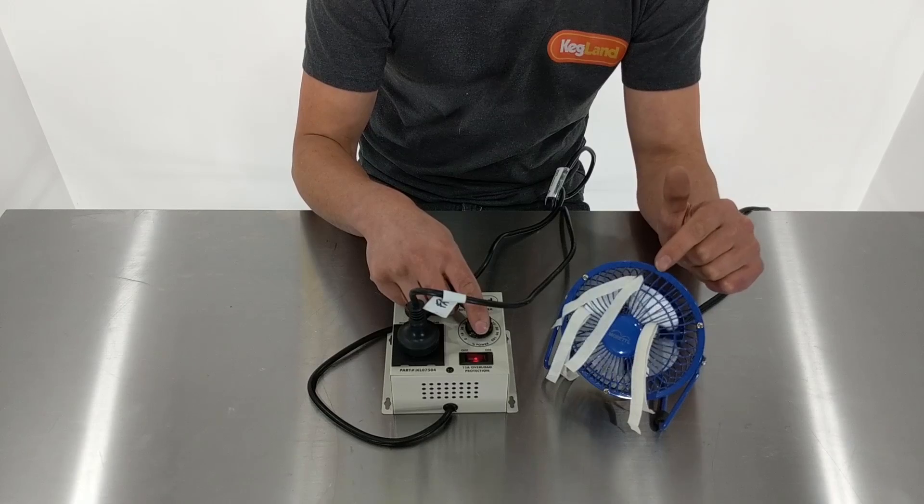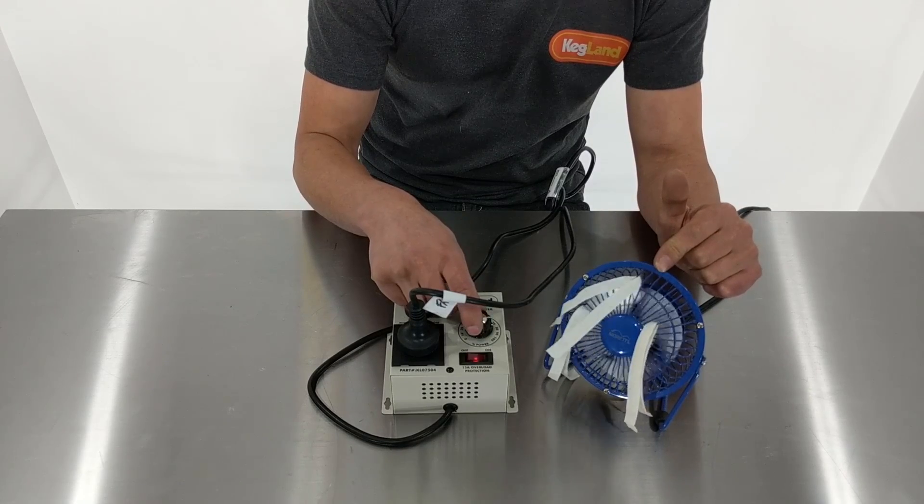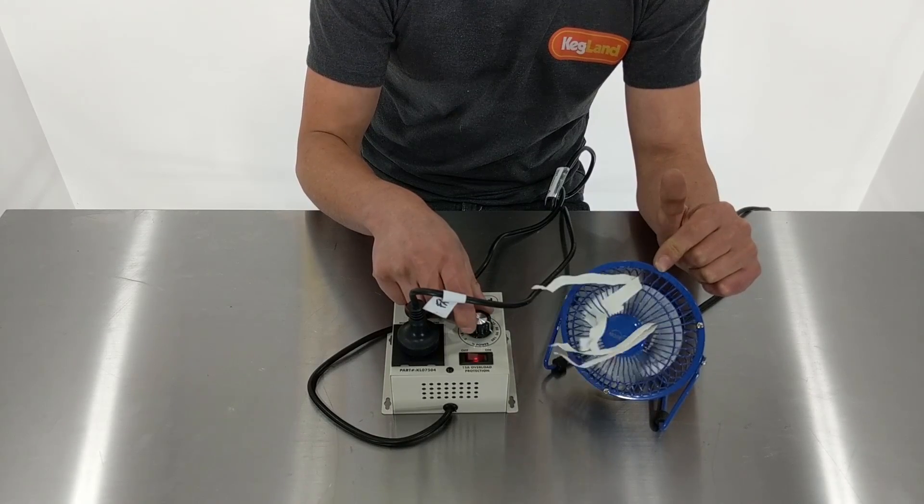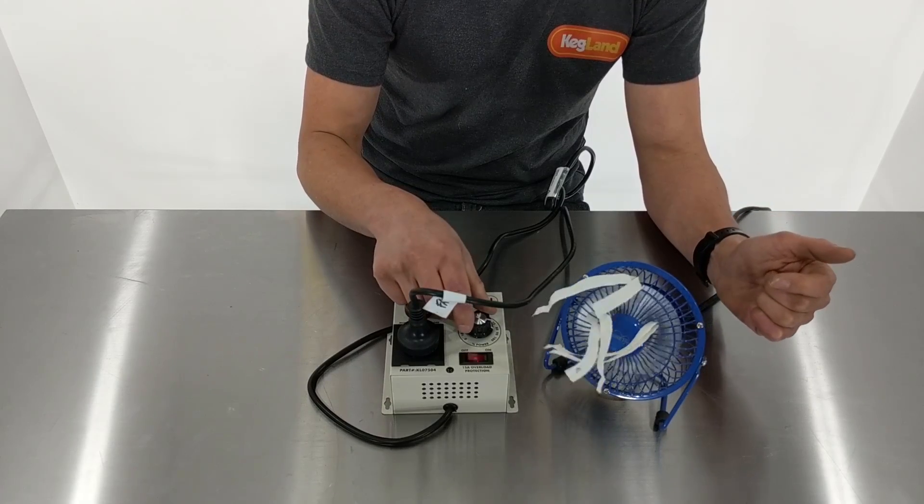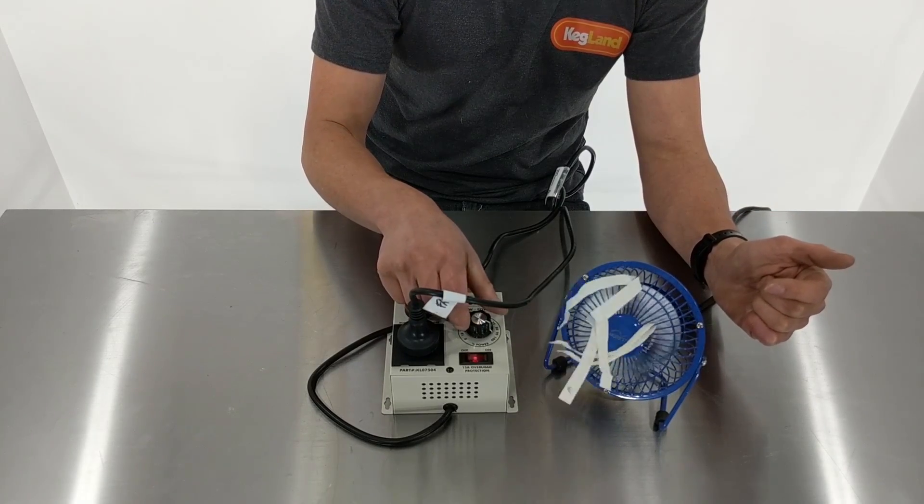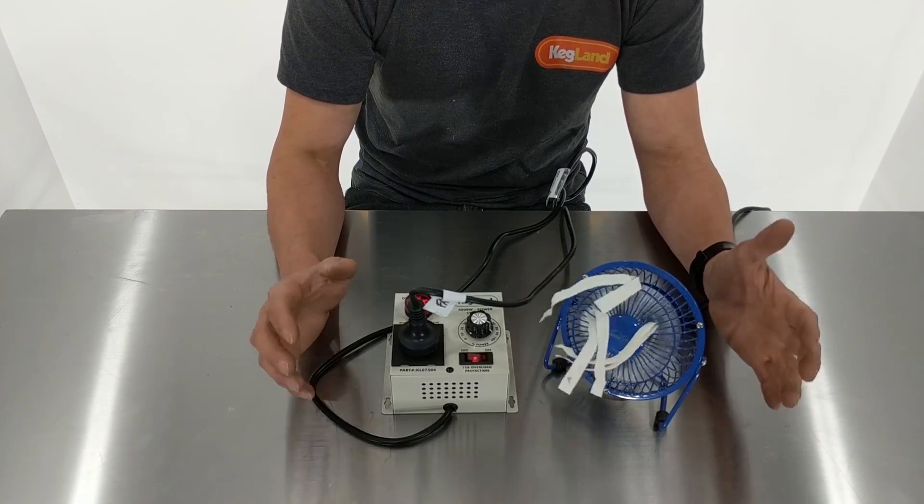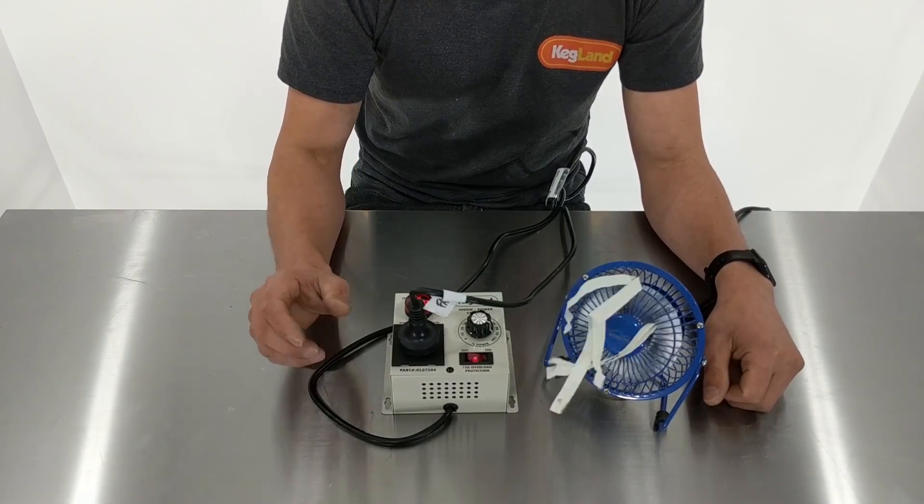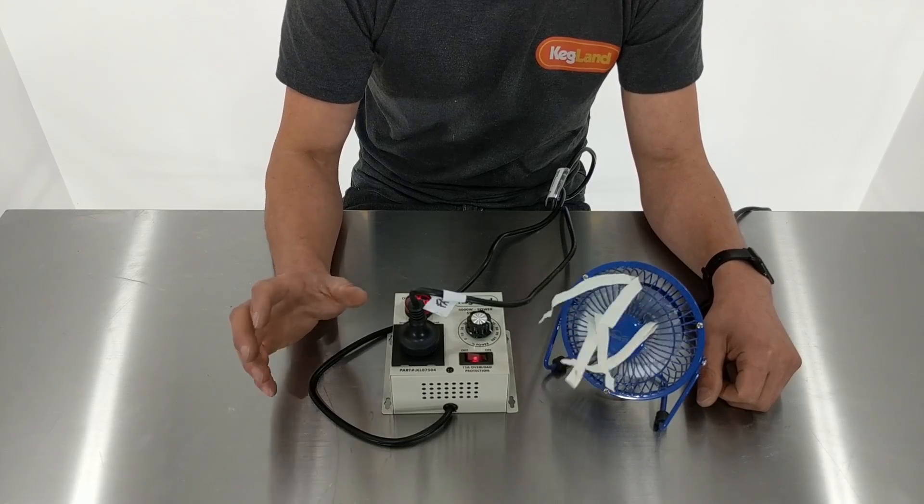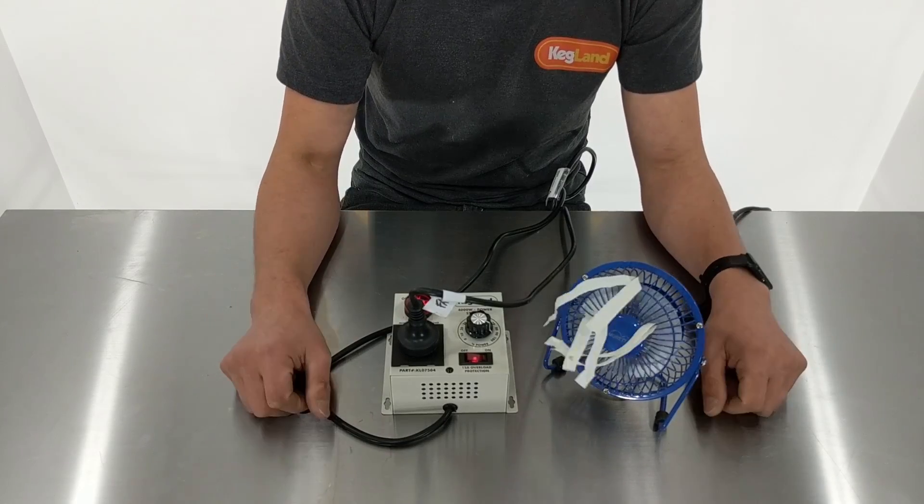And then obviously you can control right from this very slow speed we've got here up to full power like that for instance. So it's a really handy device. Definitely for brewing it has its applications, and you may find other applications around the home for running motors or even incandescent lights or something like that if you want to use it as a dimmer - it'd work for that too.